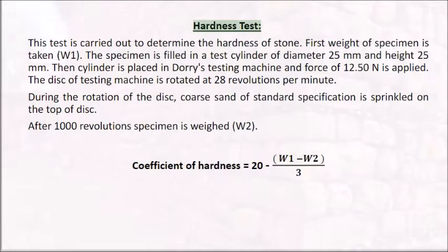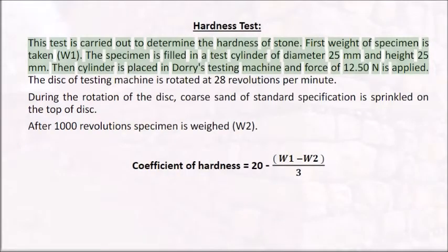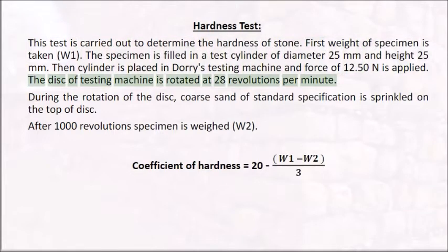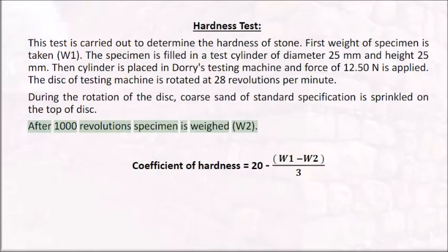Hardness Test: carried out to determine the hardness of stone. First, weight of specimen is taken (W1). The specimen is filled in a test cylinder of diameter 25 mm and height 25 mm. The cylinder is placed in Dorry's testing machine and a force of 12.50 N is applied. The disc of the testing machine is rotated at 28 rpm, and coarse sand of standard specification is sprinkled on top of the disc during rotation. After 1000 revolutions, the specimen is weighed (W2). Coefficient of hardness equals 20 minus the difference in weight.